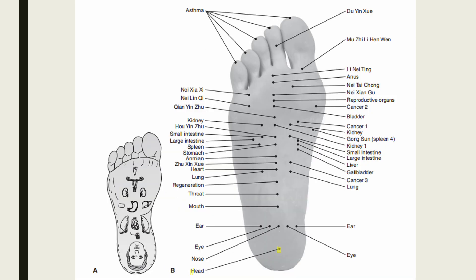On the plantar aspect of the foot, the head point is located one unit distal from the red and dark skin of the heel. The nose point is located one unit distal to the head point, or two units from the red and dark skin of the heel. Indications of the nose point include acute and chronic sinusitis.